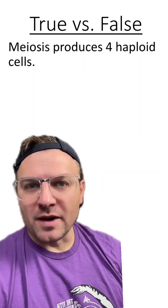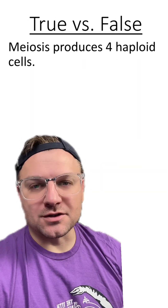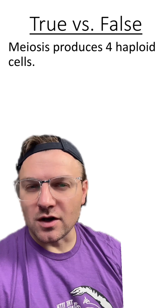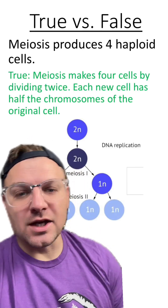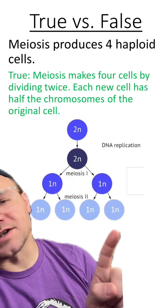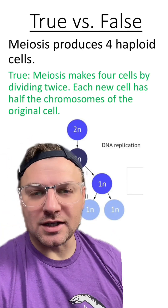Number two: meiosis produces four haploid cells. Is this true or false? This is also true. At the end of meiosis, all four cells are haploid.